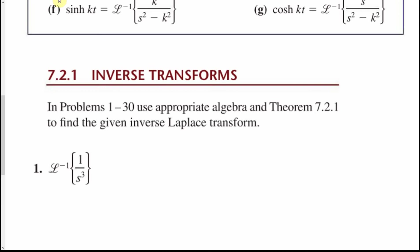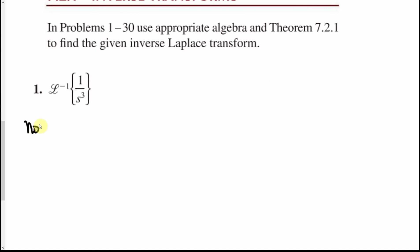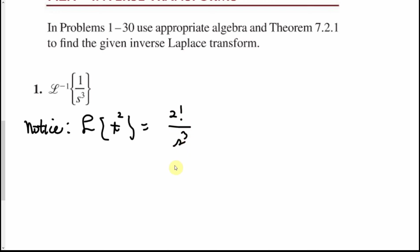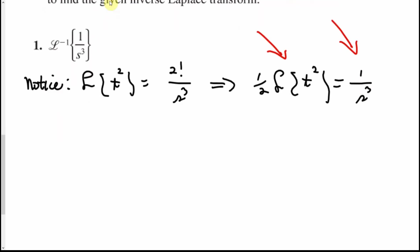The Laplace transform of t² equals 2!/s³, which is 2/s³. Dividing through by 2, we get (1/2)·L{t²} = 1/s³. Taking the inverse transform of both sides gives the result: the inverse transform of 1/s³ is (1/2)t².